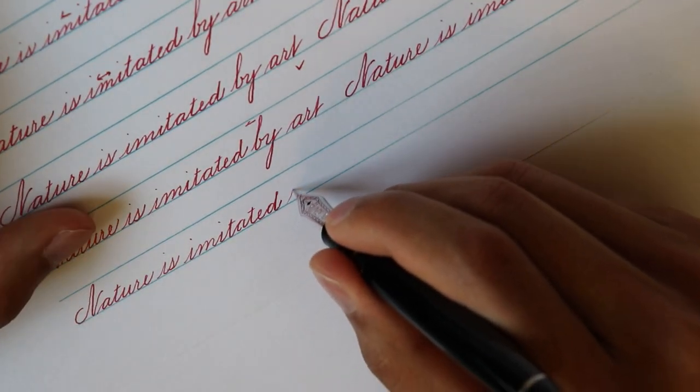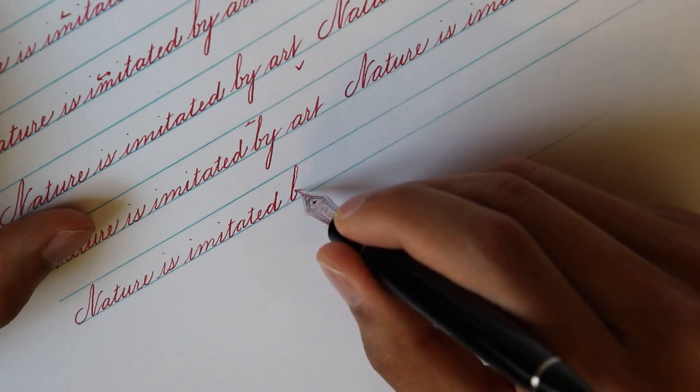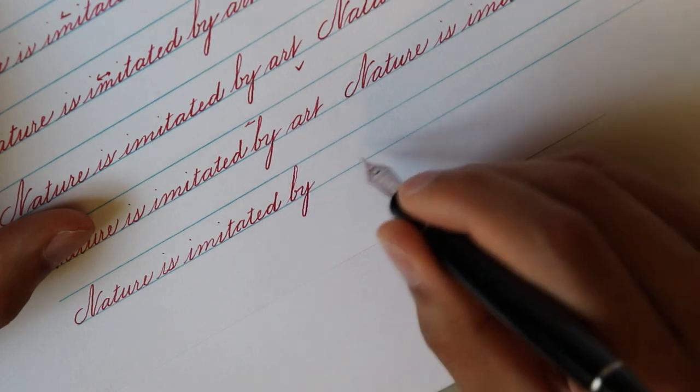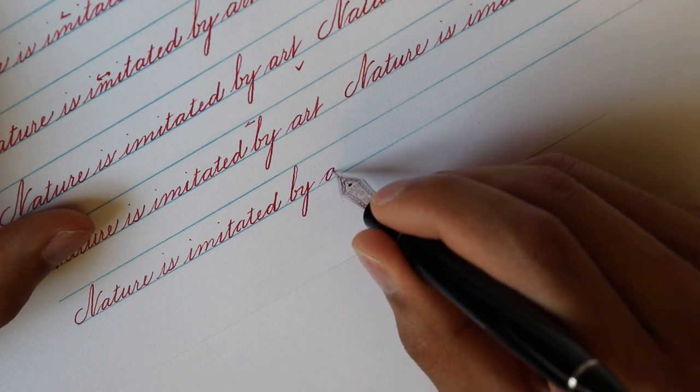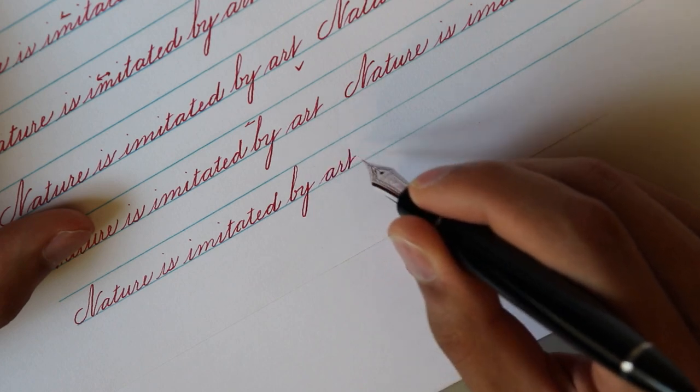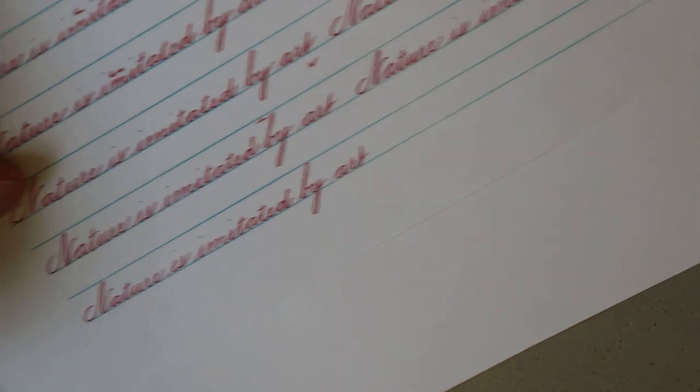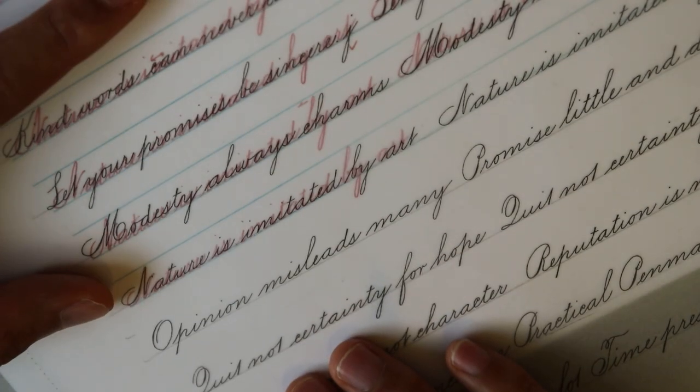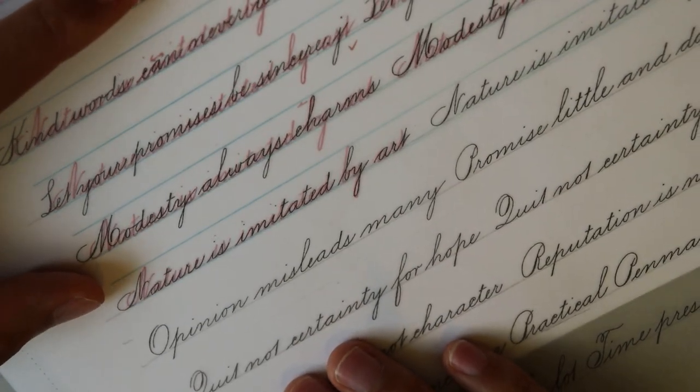But now the Kochs had their own rival operation, which was by many accounts easier to use and more sophisticated than that of the RNC. Several top Republican candidates started to purchase I-360's data, even though they were more expensive, because they were better.